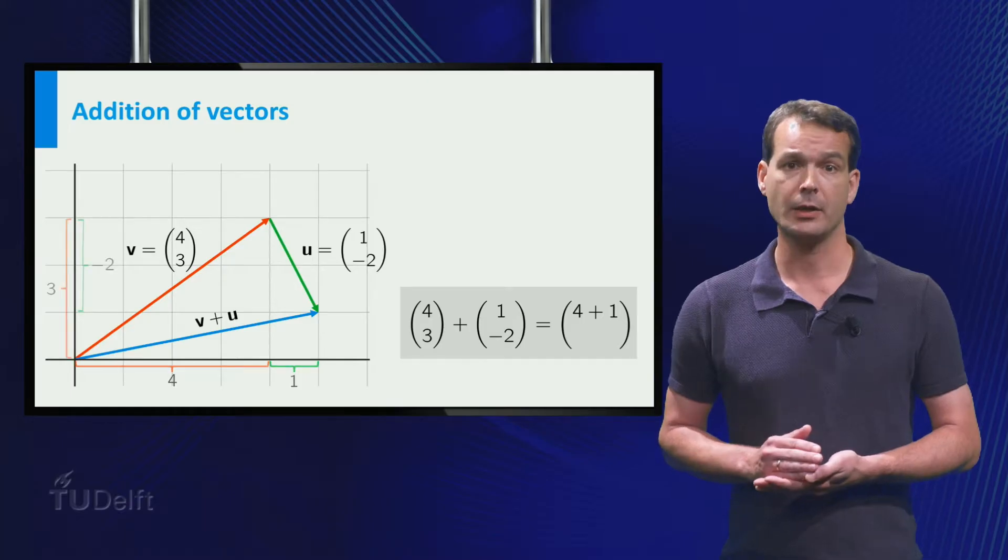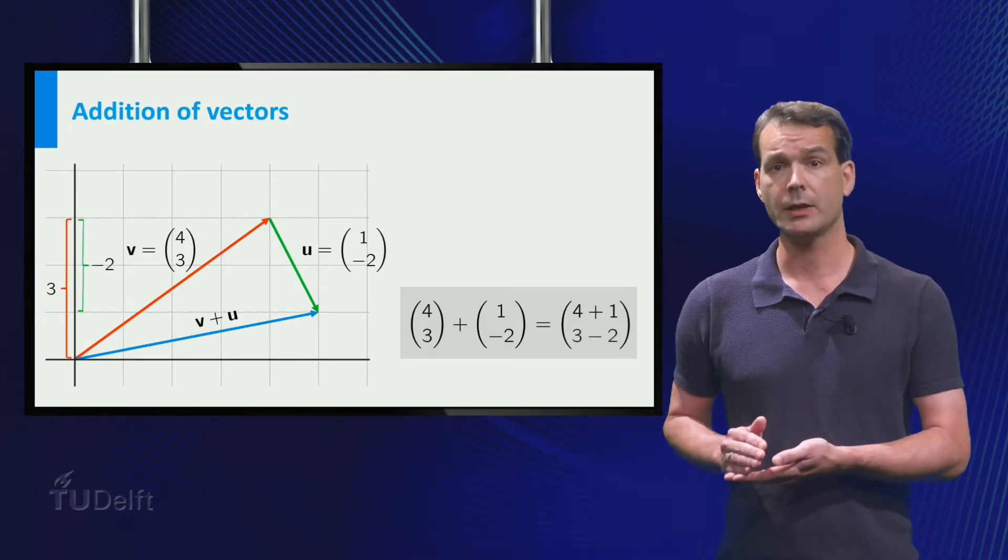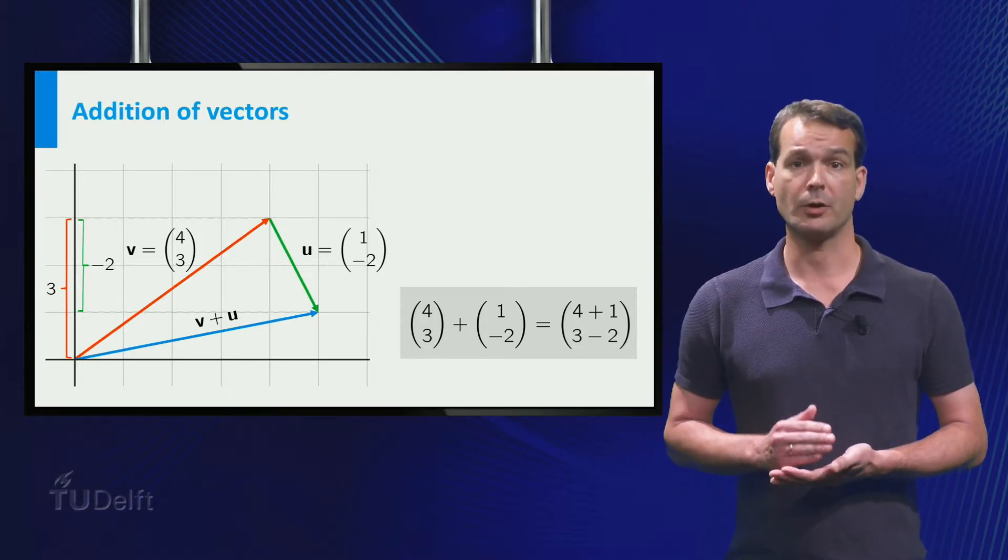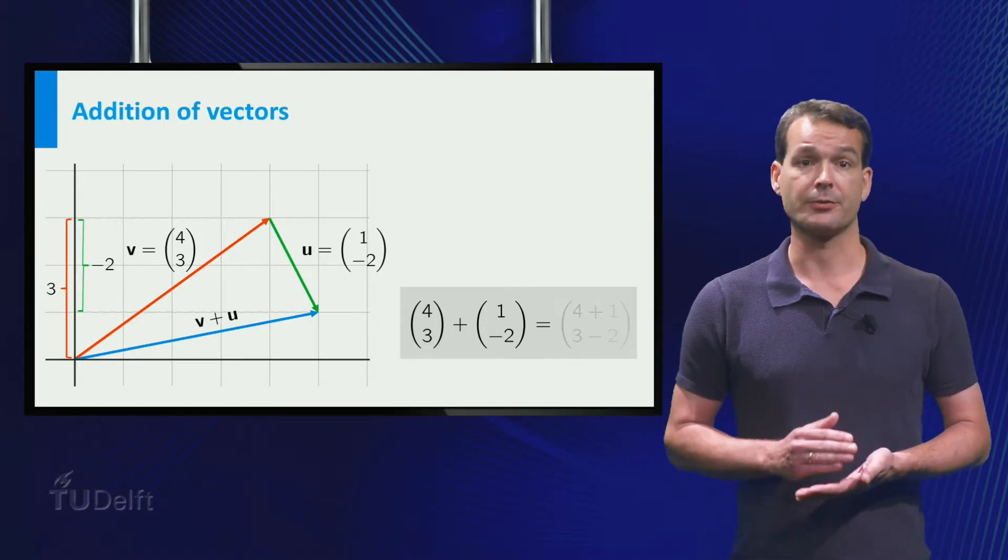In the vertical direction we move 3 up for v and 2 down for u, so 1 in total. So the sum of v and u is the vector.